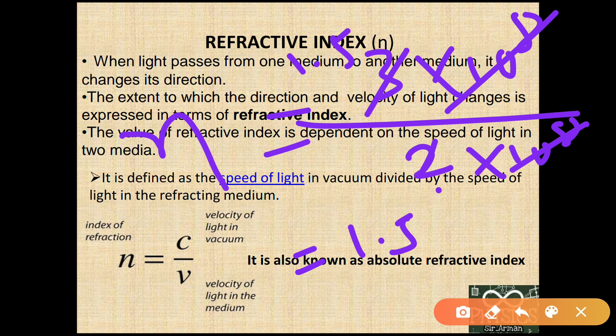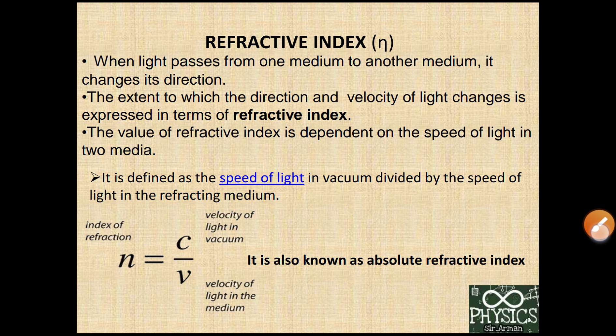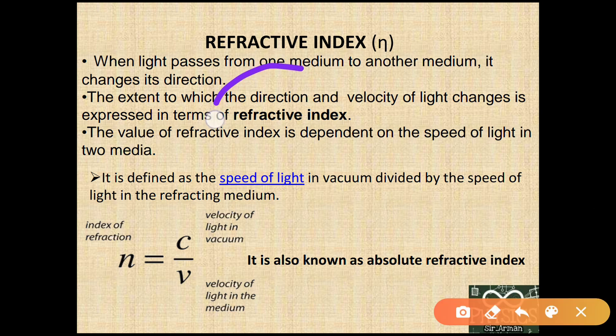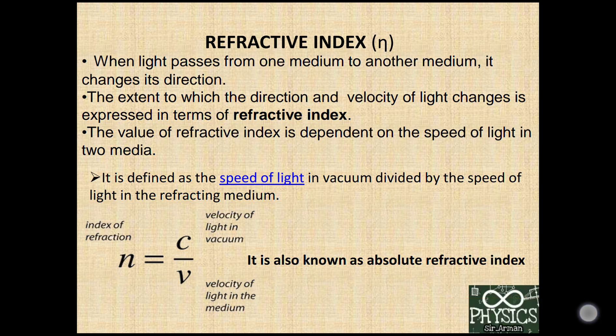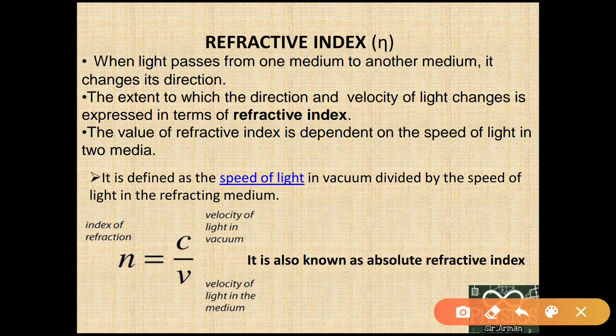So the refractive index tells us to what extent the speed of light decreases when it enters another medium from vacuum or air. Similarly, if we want to consider the direction, we need to consider the angle, which we will see in the relative refractive index part. The value of the refractive index depends on the speed of light in the two media.